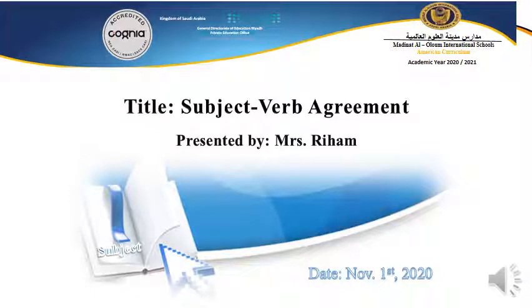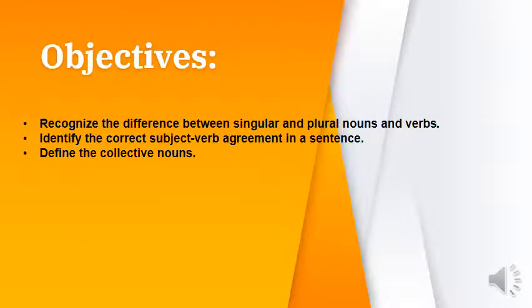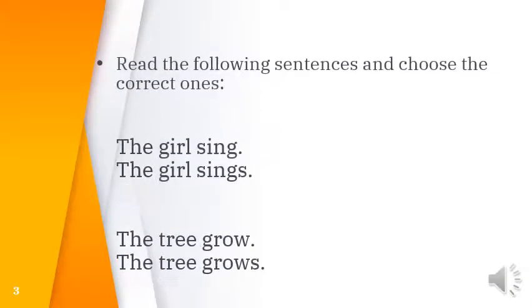Hello and welcome to our new grammar lesson on subject-verb agreement. Let's look at these sentences and choose which one is correct. The first group: 'the girl sing' or 'the girl sings' — which one is correct? The second one is correct, because the verb with an S agrees with the singular noun. Similarly, 'the tree grows' is correct because this is a singular noun and the verb that agrees with a singular noun is the verb with an S.